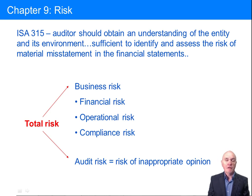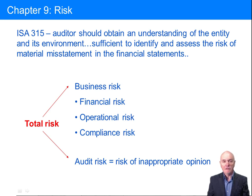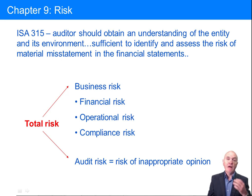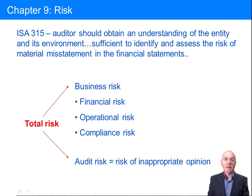ISA 315 — and by the way, you are not required and will get no marks for quoting ISA numbers or titles — but the requirement on the auditor is to obtain an understanding of the entity and its environment, sufficient to identify and assess the risk of material misstatement in the financial statements. So wherever there's a high risk area that you've identified, that's the area that your audit planning would say you should put in sufficient effort to collect the correct amount of evidence to back up your opinions.